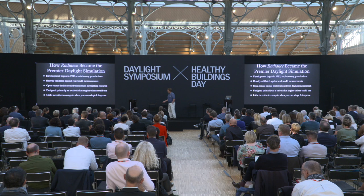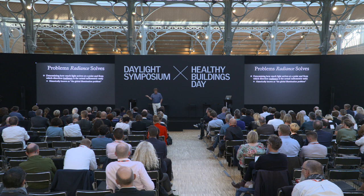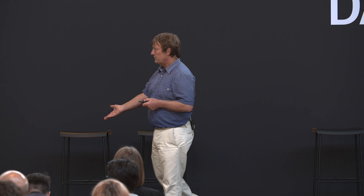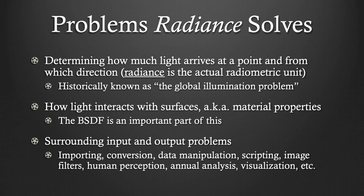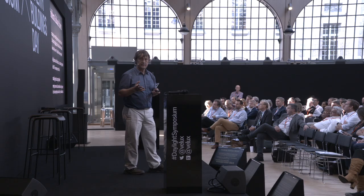Problems that Radiance solves in particular include determining how much light arrives at a point from which direction — radiance is actually the radiometric unit for that quantity. This is historically known as the global illumination problem: how does light bounce around in a space? Part of that is how light interacts with surfaces — the material properties and BSDF are an important part of this. Most of those 150 tools involve converting inputs and outputs and manipulating data to solve your actual problem at hand, including human perception.